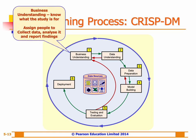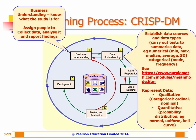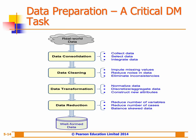In the business understanding step, the focus is on knowing what the study is for and planning the project — assigning people to collect data, analyze it, and report findings. The data understanding step focuses on establishing data sources and types, and performing preliminary statistical or exploratory analysis. The third step is data preparation, which takes the identified data and prepares it for analysis — ranging from data collection to data reduction. In reality, data pre-processing consumes most of the time and effort, accounting for roughly 80% of the total time spent on a data mining project.